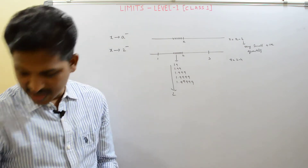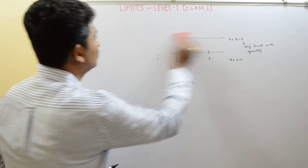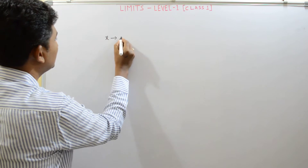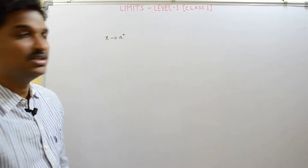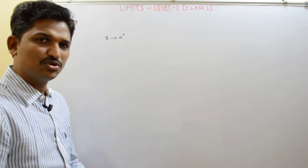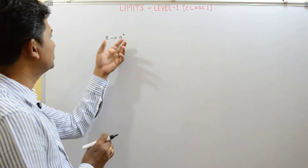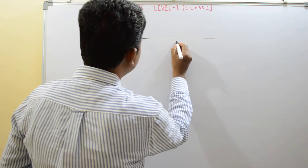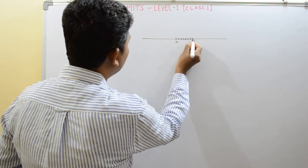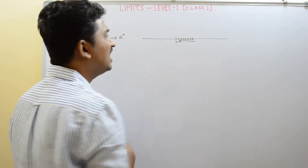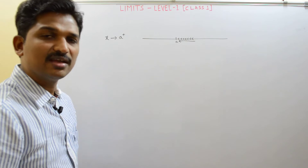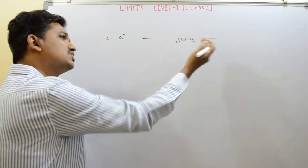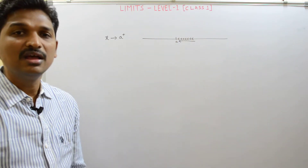Now we will see what x approaches to a plus means. X approaches to a plus means x is approaching to a from the right. If you take a on the number line, x approaches to a plus means all x values are greater than a and very, very nearer to a.